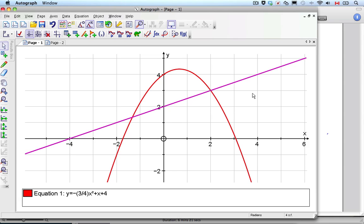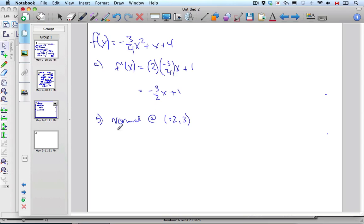The normal and the tangent are related. So, in order to find the slope of the tangent at 2, let's go negative 3 over 2 times 2 plus 1, which will be negative 3 plus 1, which is negative 2. That's the slope of the tangent. Therefore, the slope of the normal is equal to 1 half.